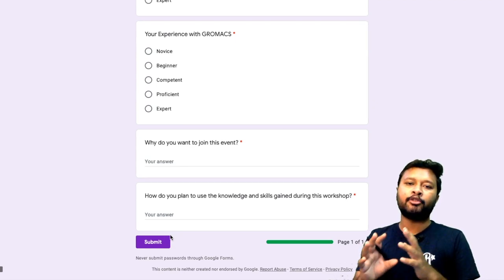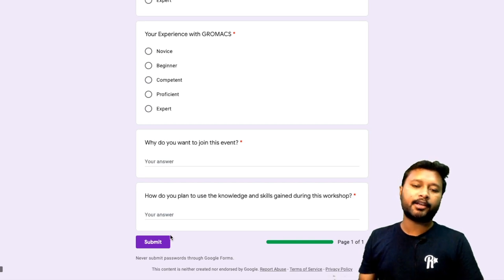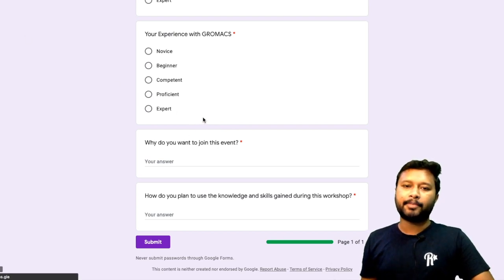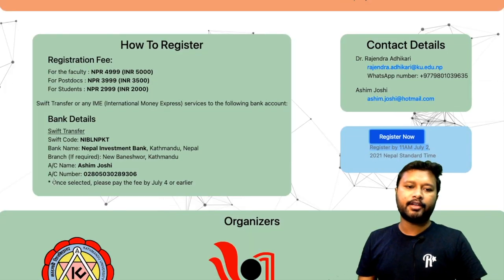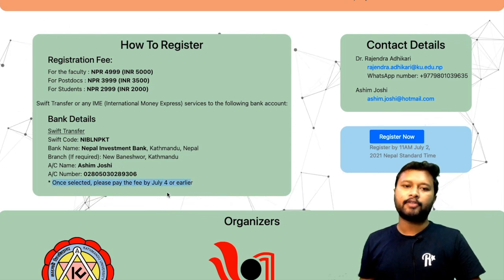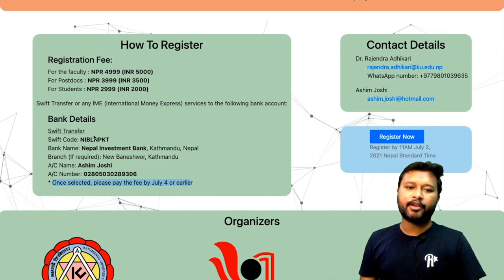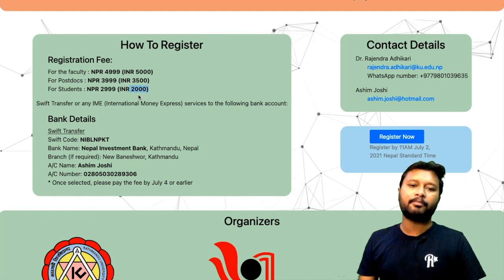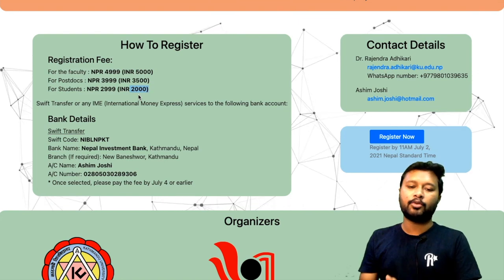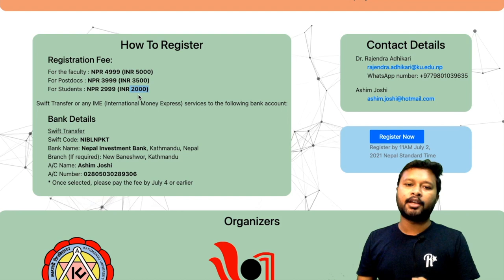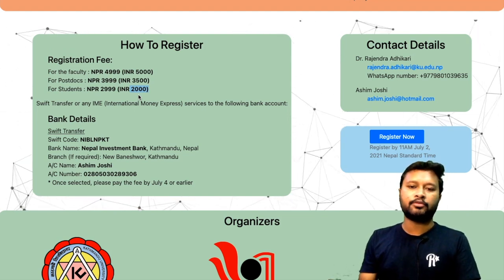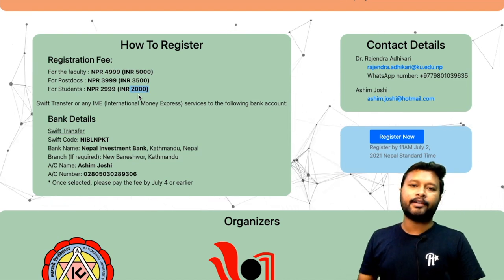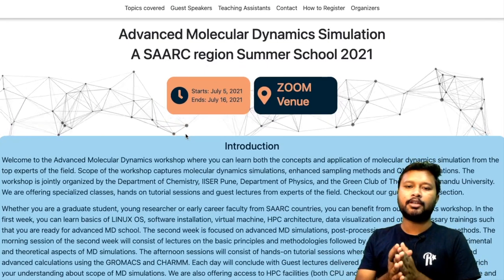Once you submit the form, the organizers will evaluate your application. If selected, you will then need to make the payment — you don't pay upfront. The payment deadline for selected candidates is July 4th. All bank transfer details and account information are provided on the website. For students, 2000 rupees is not a large amount for all the content being offered.